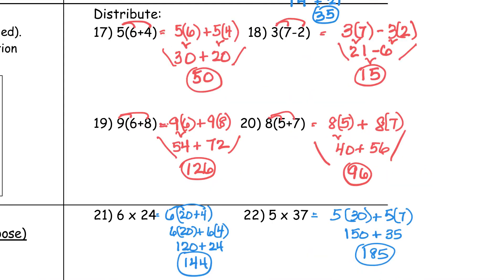Number 17, the answer was 50 — applying the distributive property. What happens is you're multiplying the outside number onto the numbers on the inside, and then you follow the order of operations. For number 17, the answer was 50. Number 18, the answer was 15. Number 19, the answer was 126. And number 20, the answer was 96.